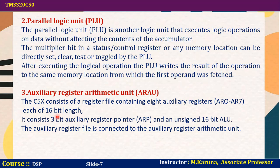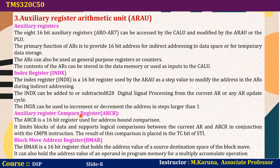The auxiliary register arithmetic unit (ARAU) consists of a register file containing eight auxiliary registers AR0 to AR7. Each register length is 16-bit. There is an auxiliary register pointer of 3-bit size and an unsigned 16-bit ALU. The auxiliary register file is connected to the ARAU, which also consists of an index register, compare register, and block move address register. These auxiliary registers are 16-bit registers that can be accessed by the central ALU and modified by the ARAU. Their primary function is to provide 16-bit address for indirect addressing to data space or for temporary data storage.